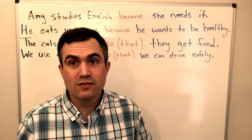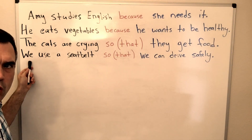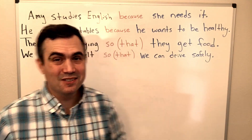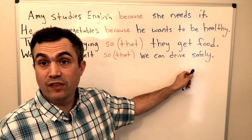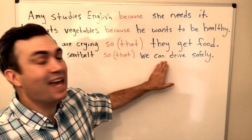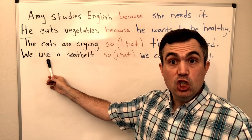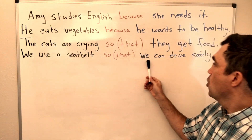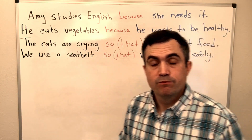There's a difference between an adverbial clause using 'because,' which gives a reason, and 'so' or 'so that,' which gives the purpose. Let's look at one more example: 'We use a seat belt so that we can drive safely.' You can also say 'we use a seat belt so we can drive safely.' That's the purpose.